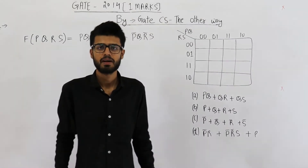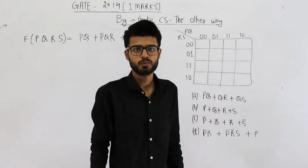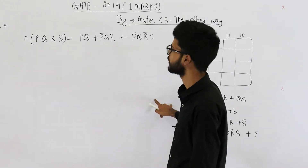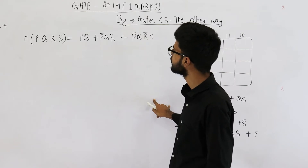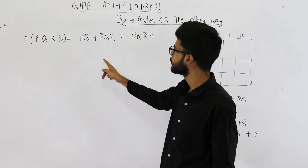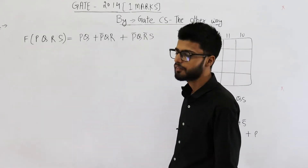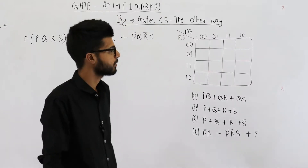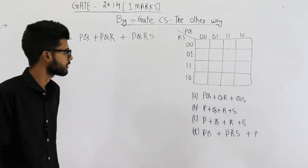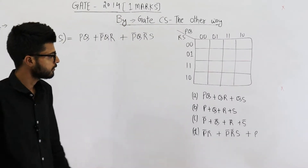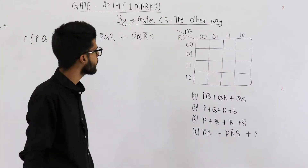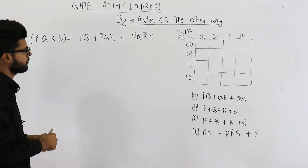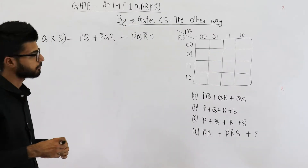Hello students, welcome back. This is a question from GATE 2014 Set 1. You can see they have given you a function f and they are asking for the minimal SOP form of this function. You also have 4 options. So let's first try to minimize it using Boolean laws.